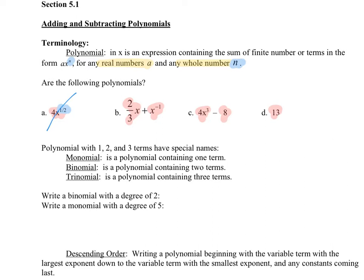'a' is a real number — 'a' is the number multiplying the variable. So 'a' is four; is it a real number? Yes. There's no x, but that's okay because that means n is zero. But we still have a problem: negative one is not considered a whole number. Whole numbers are zero through infinity. A negative exponent turns it into a variable in the denominator and does not count, so this would not be a polynomial. But the rest definitely would be.